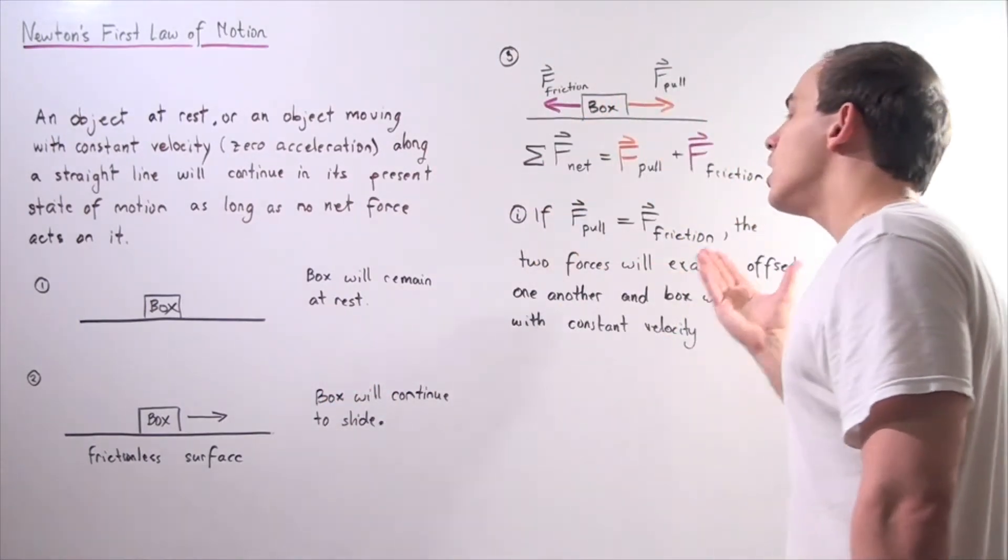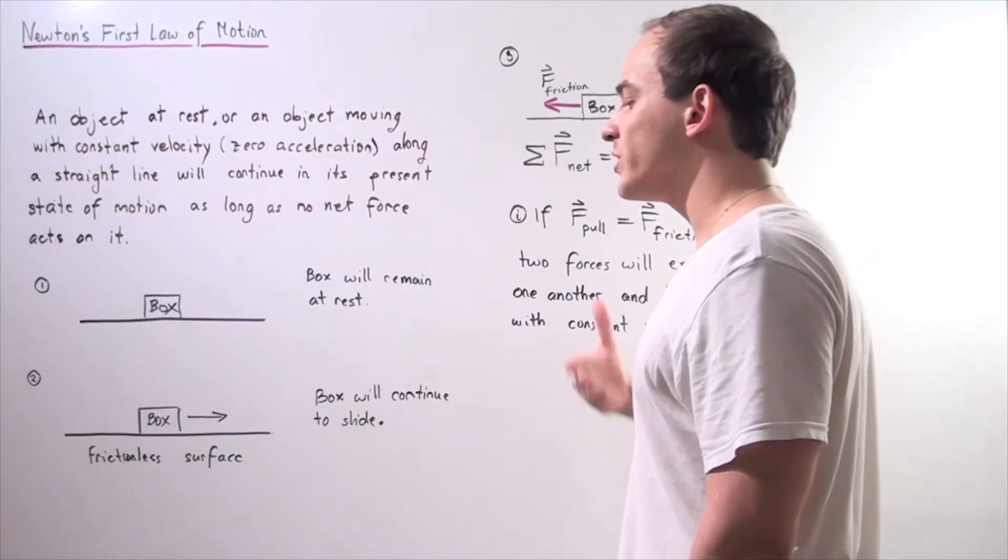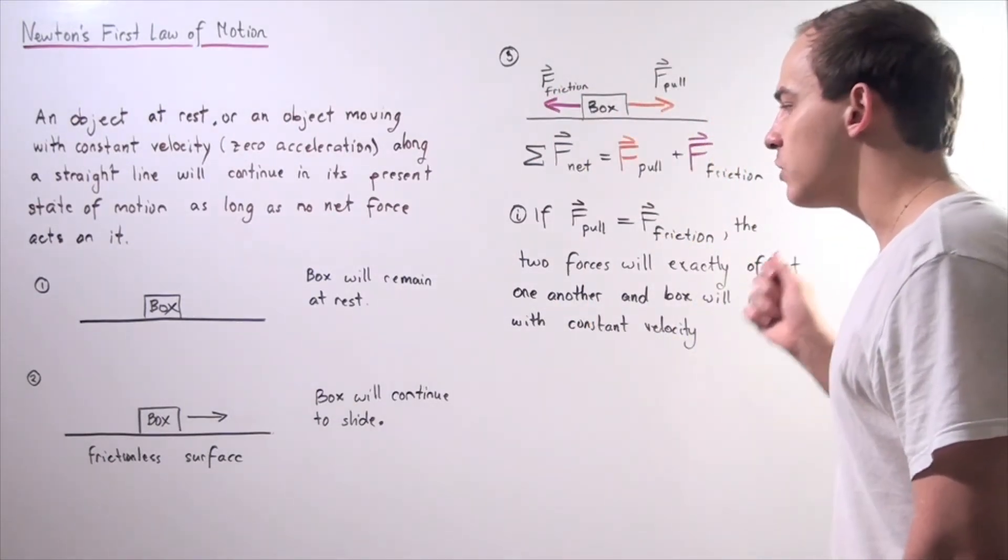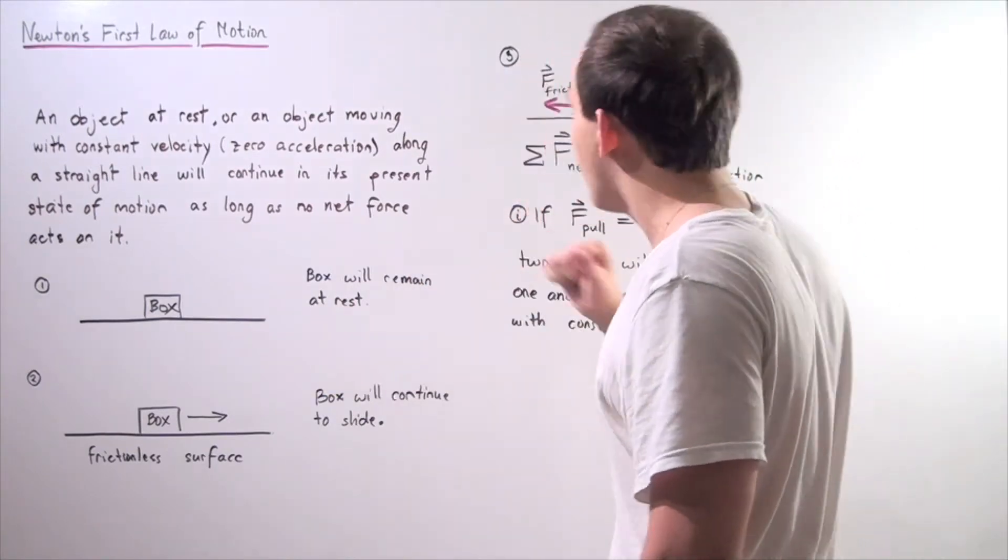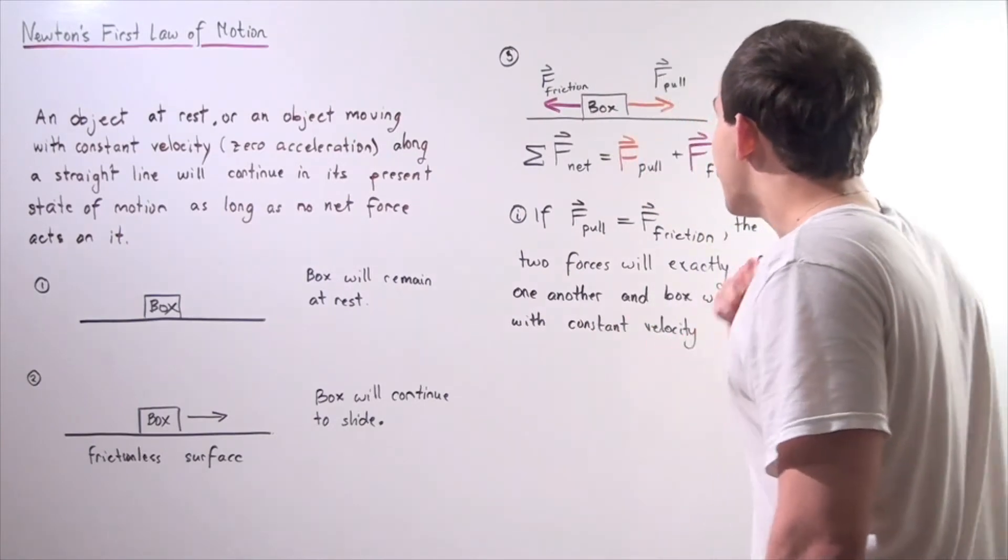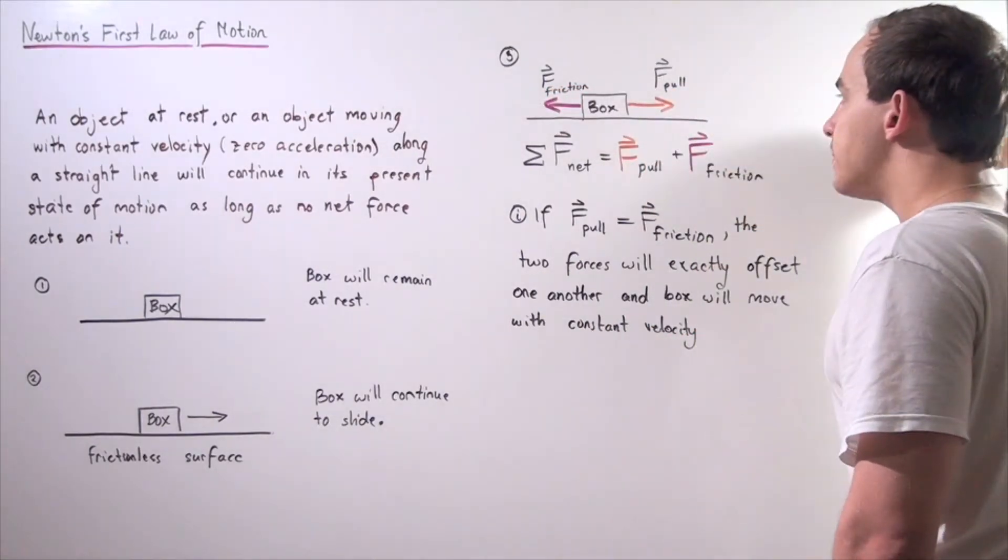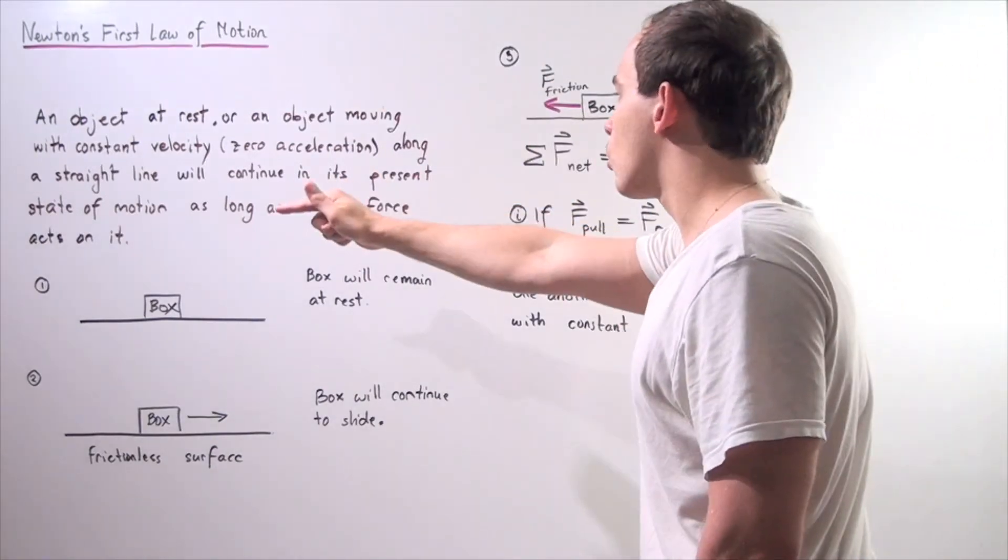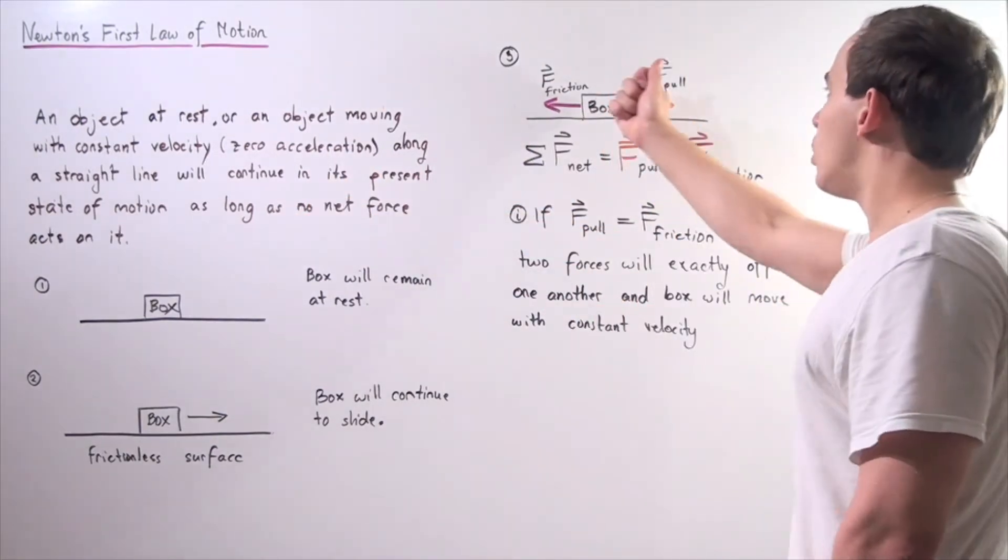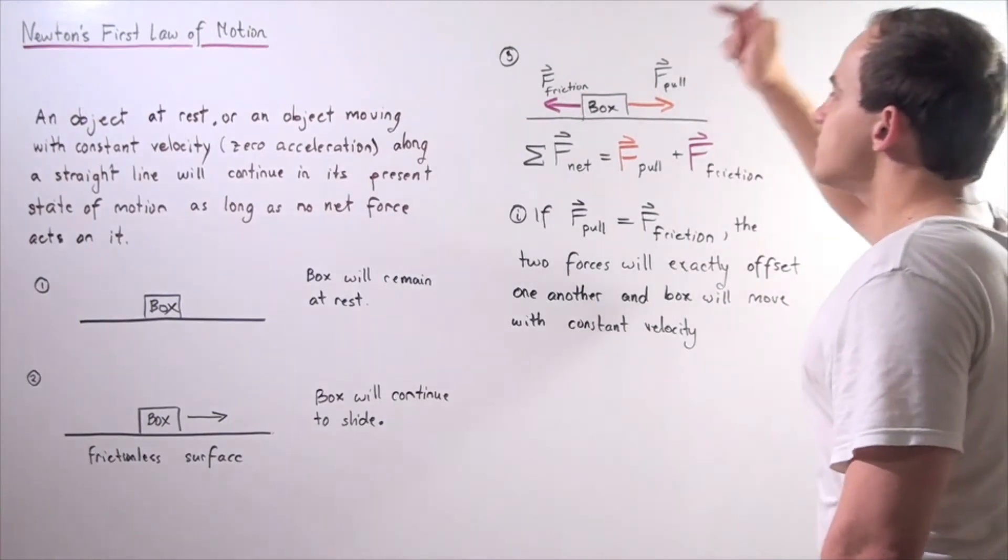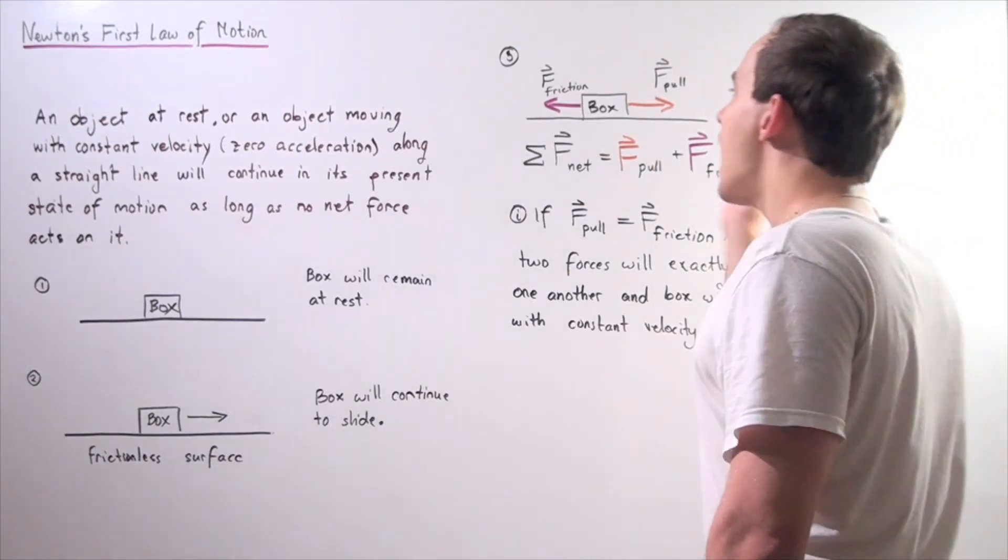Now let's look at another example. Let's talk about a more realistic scenario where we actually have friction. So let's suppose I take my same box, I place it on my table, and now there is friction. If I begin pulling on my box, the force of friction will pull backwards.